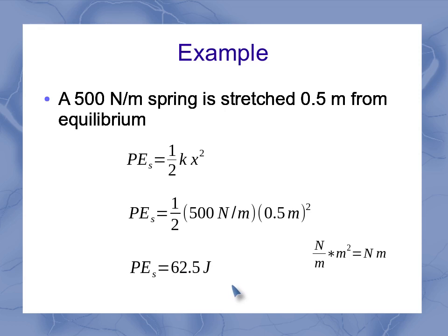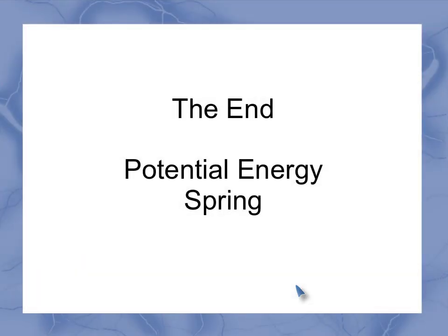Just to note on the units real quick, if I've got a newton per meter and multiply it by a meter squared, one of those meters cancels, and I'm left with newton meters, which is equivalent to a joule. So there's your potential energy of a spring.